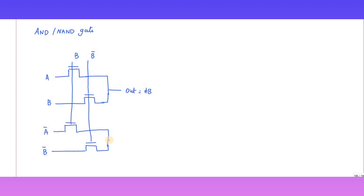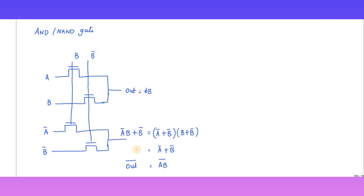Similarly, I can write this one as A-bar·B + B-bar, which is nothing but A-bar·(B + B-bar). B + B-bar is one, so that equals A-bar. That is equal to A·B the whole bar. So this output is A·B, meaning OUT-bar is nothing but (A·B)-bar. So I get two outputs: one is AND gate and another is NAND gate. Similarly, I am going to design the OR and NOR gate.